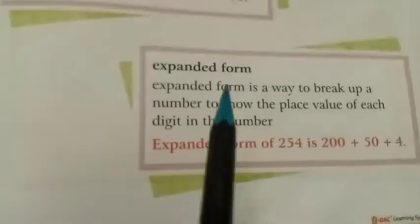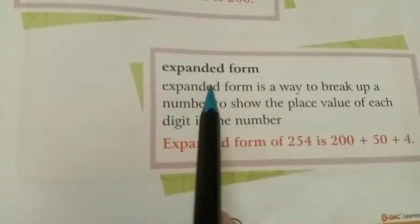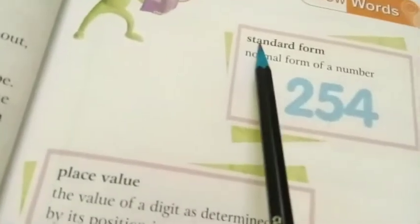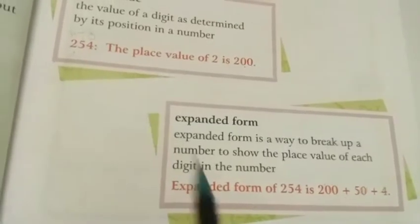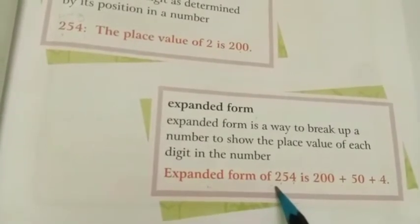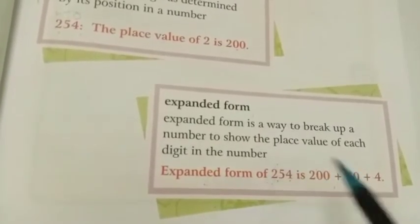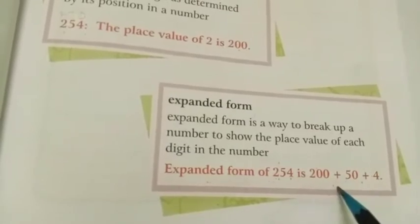The next concept we are going to learn is expanded form. In expanded form, we expand a number like 254. The first digit from right is ones, second is tens, third is hundreds. So 2 is on the hundreds place — that's 200. Plus 5 is on the tens place — that's 50. Plus 4 is on the ones place. So 200 plus 50 plus 4 equals 254.